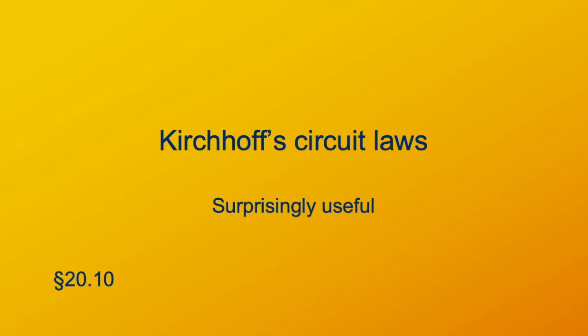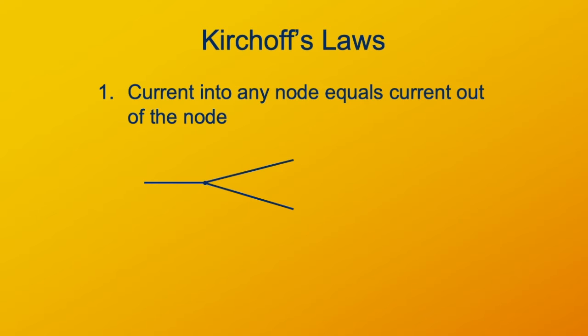Let's look at what they are and what they mean. The first of the laws is the node law, and this says that at any point in a circuit, it doesn't matter where it is, though it's most useful when you're looking at where there's a branch in a circuit, at any point in a circuit, the current coming into that point is equal to the current going out of that point.